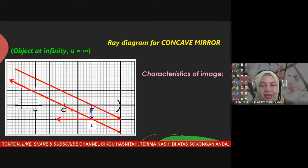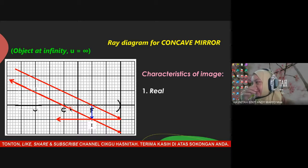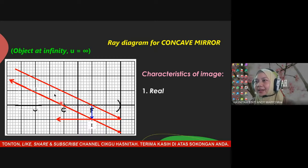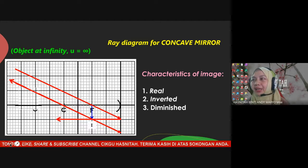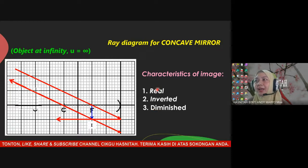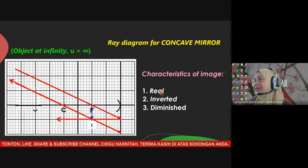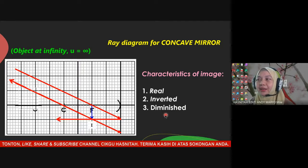Important note for mirrors: the rule for real and virtual is opposite to lenses. For mirrors, if the image is formed in front of the mirror, it is real. If it forms behind the mirror, it is virtual. For this position (object at infinity), the image at F is real, inverted, and diminished.